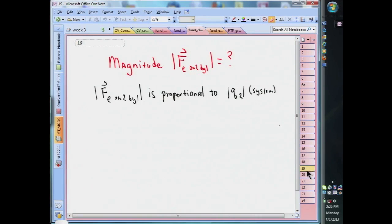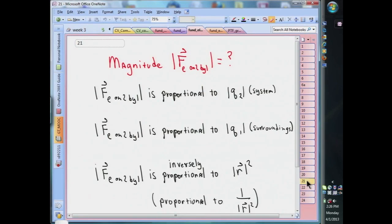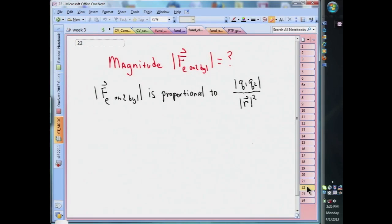Experiments and observations tell us that the magnitude of the force is directly proportional to the magnitude of the system charge Q2, as well as directly proportional to the magnitude of the charge Q1 in the surroundings, the source charge. Experiments and observations also tell us that the magnitude of the force depends on the distance between the two charged objects. Specifically, the magnitude of the force is inversely proportional to the square of the distance, where that distance is given by the magnitude of the vector R. We can combine all this together in a statement which says the magnitude of the force is proportional to the product of the magnitude of the charges divided by the square of the distance between the charged objects.